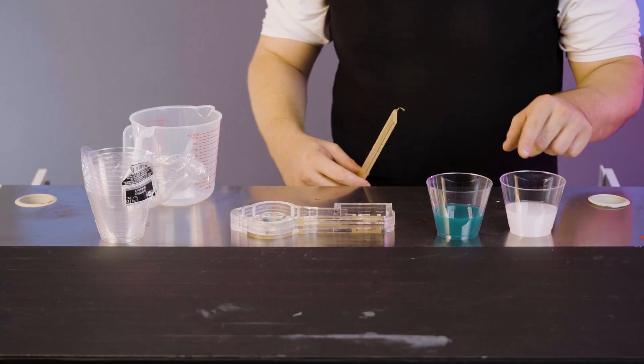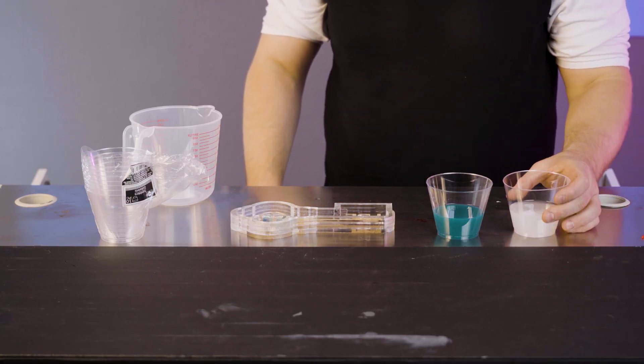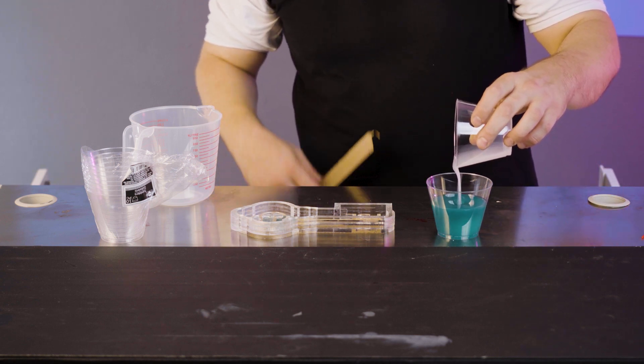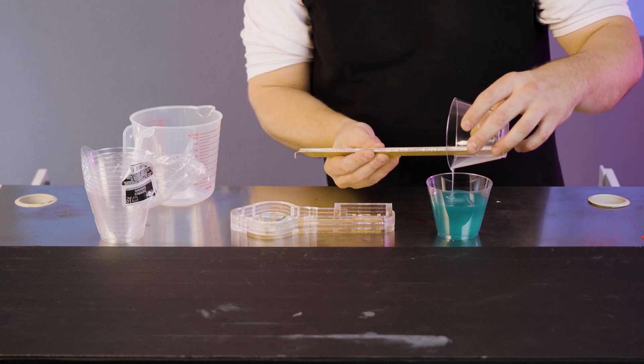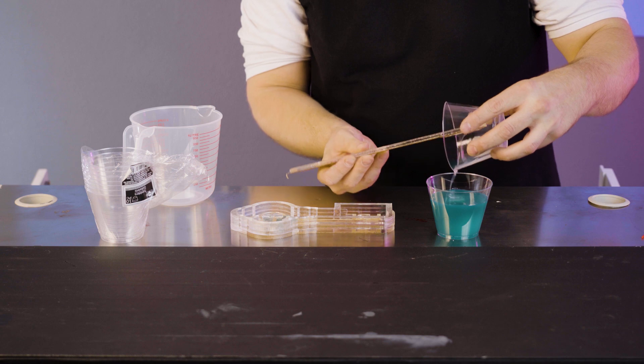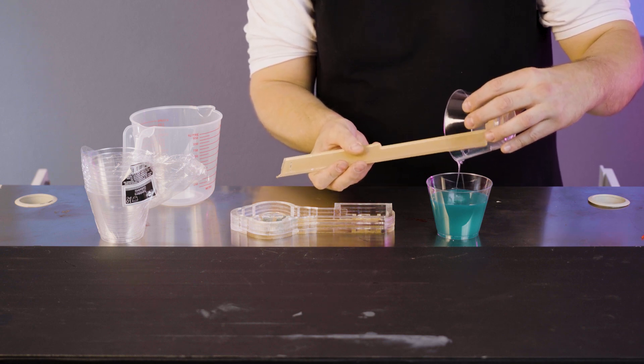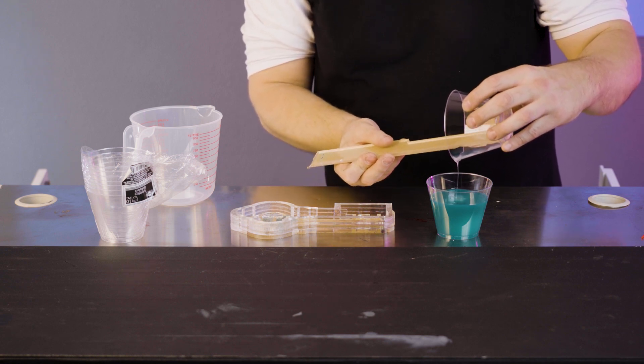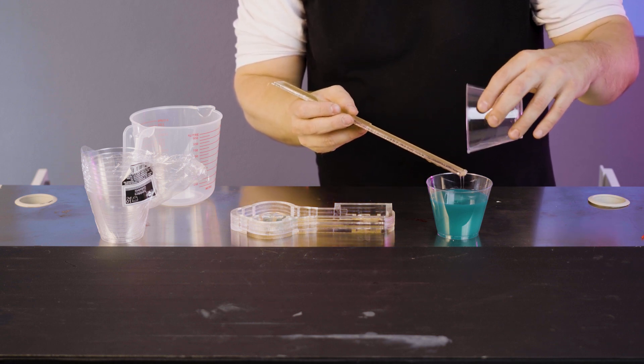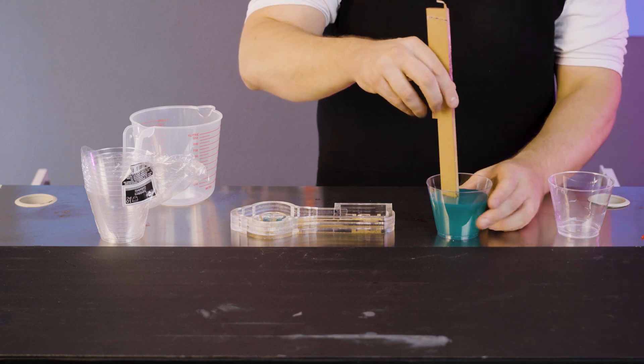Now we're going to mix part A with part B. We're going to simply pour it in. These are handy scrap acrylic. Get all the residual silicone off of the bottom and the edge. And stir.